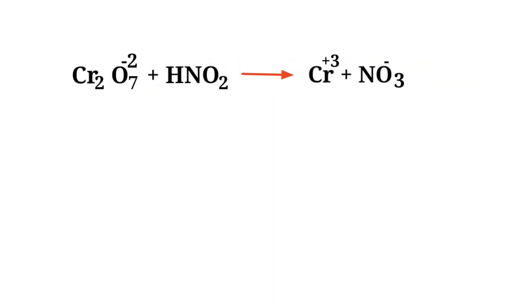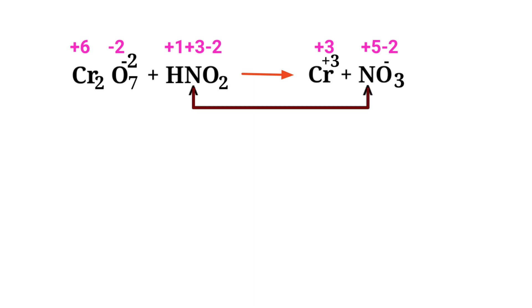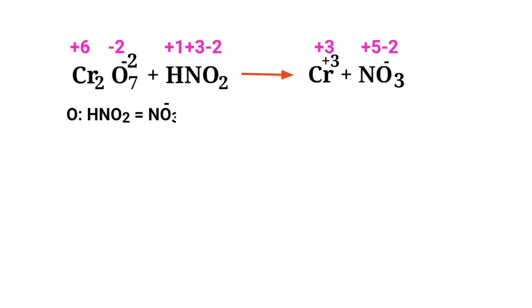Identify the reducing and oxidizing agents using the rules of assigning oxidation numbers. In the ion electron method, one reaction is divided into two half reactions, which are then balanced and added together. Nitrogen has a charge of plus 3 and is changing to plus 5, so nitrogen is being oxidized. Chromium has a charge of plus 6 and is changing to plus 3, so chromium is being reduced.